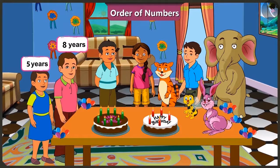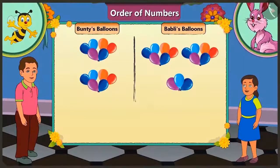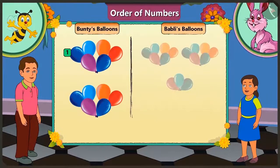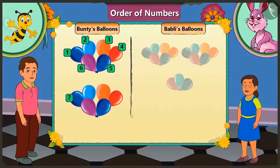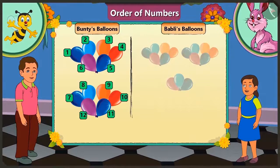Oh yes, you are right. Honey, can you tell me how many balloons do Bunty and Bubbly have with them? Bunty has 1, 2, 3, 4, 5, 6, 7, 8, 9, 10, 11 and 12 balloons.